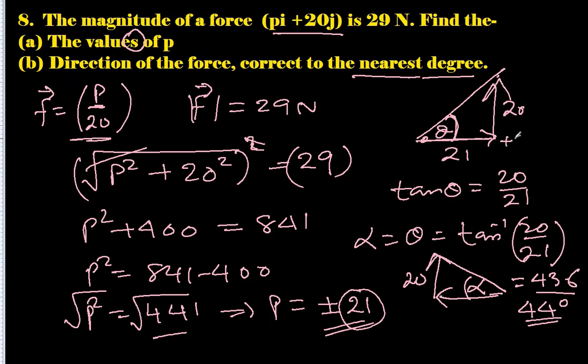But since they said we have to write it correct to the nearest degree, so the nearest degree to this will be 44 degrees. But one of the resultant is 44 degrees anticlockwise to the positive x direction. The other one possibility is 44 degrees, same angle, but clockwise to negative x direction. These are the two different answers for this same question.